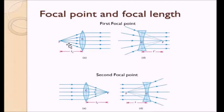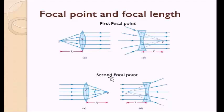To recap the concept of focal point: the first focal point is the point from where the light is emerging so that after refraction through the lens the rays travel parallel. The second focal point is the point where the rays of light either meet or tend to meet when a parallel set of rays passes through the lens.